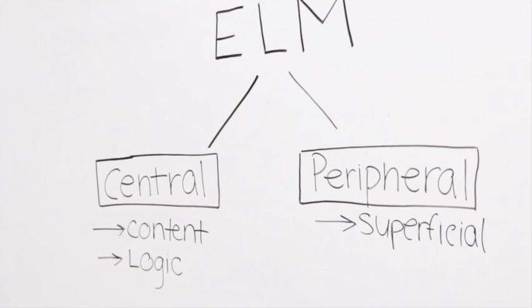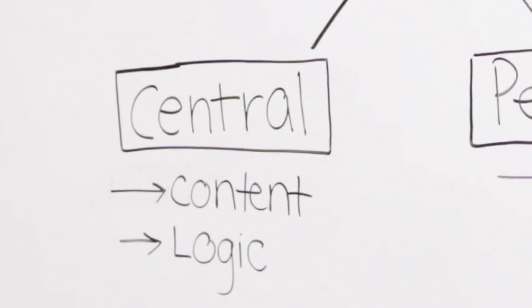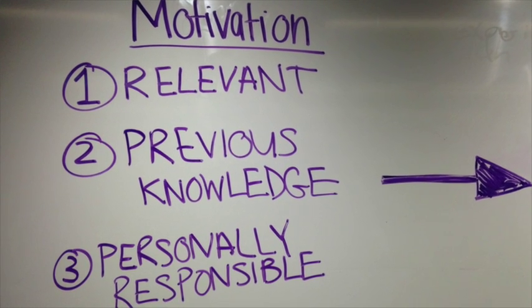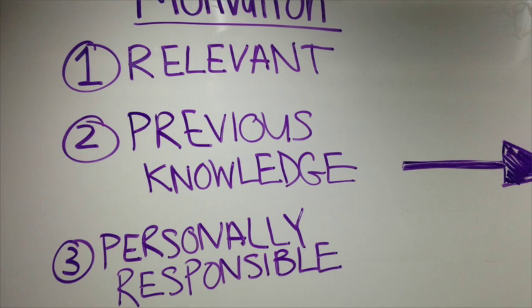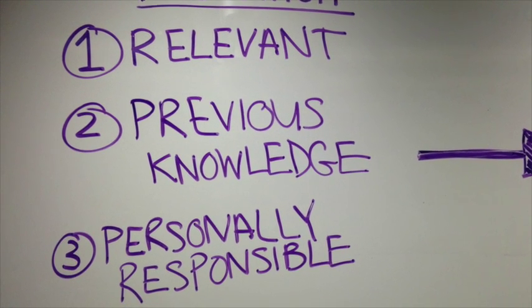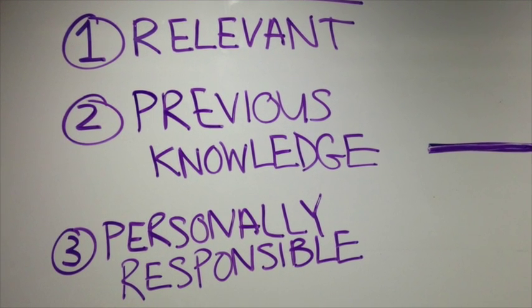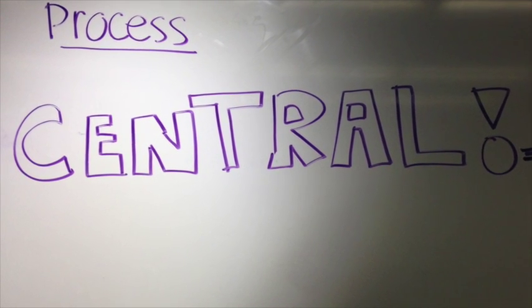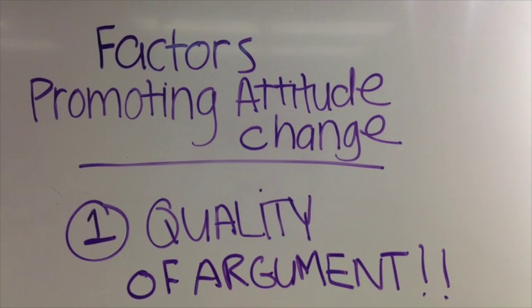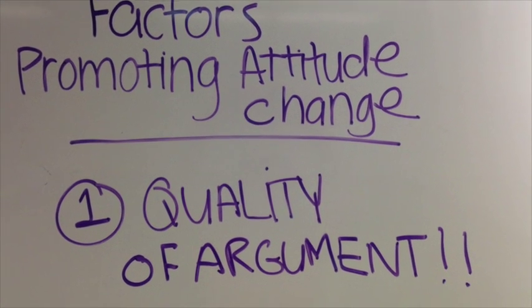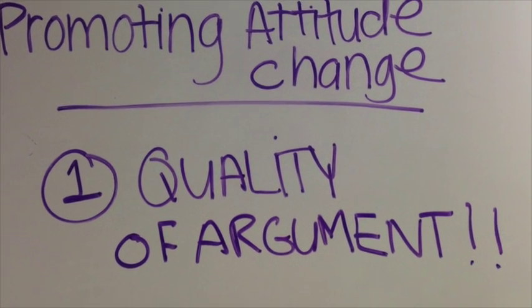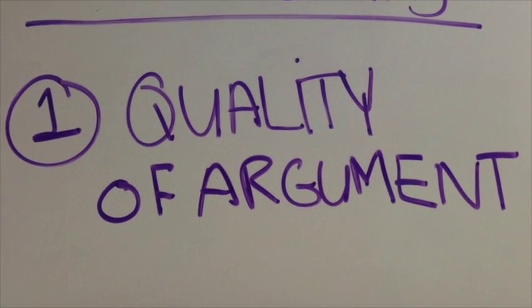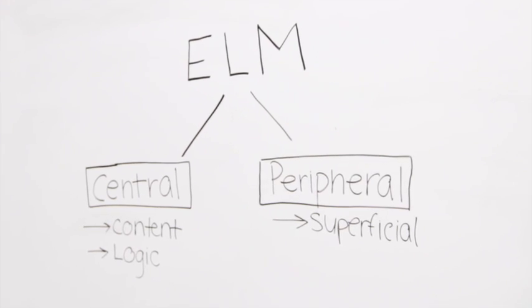We're going to start with the central route. The central route is generally activated when the issue is personally relevant to the person, there is knowledge in this domain, or the person feels personally responsible for what the message or the idea contains. The central route focuses on the quality of the argument or the message that is actually being said. It takes effortful cognitive processing to think about the message over the more superficial concepts.